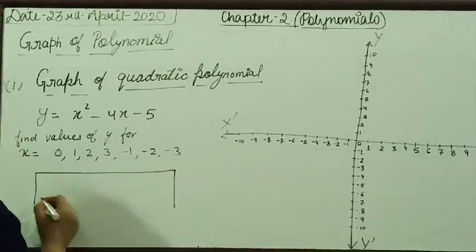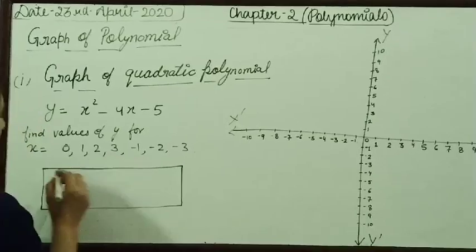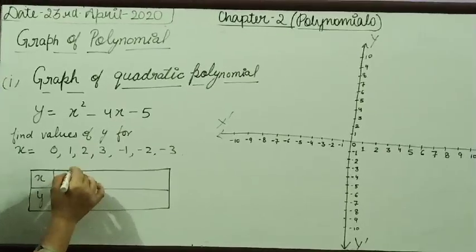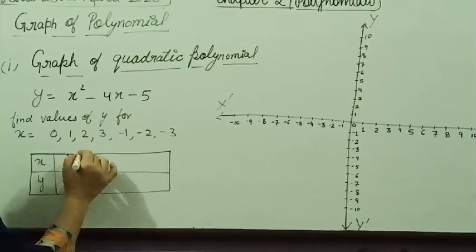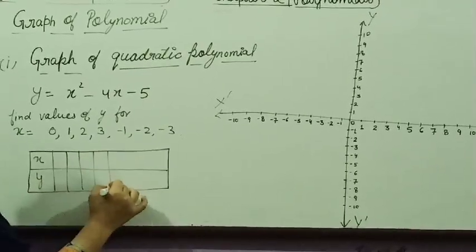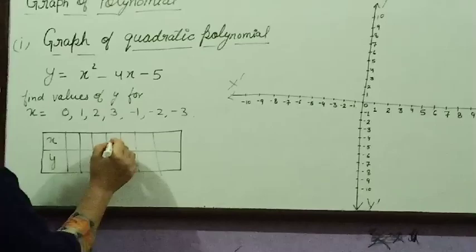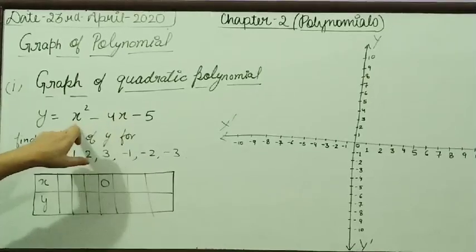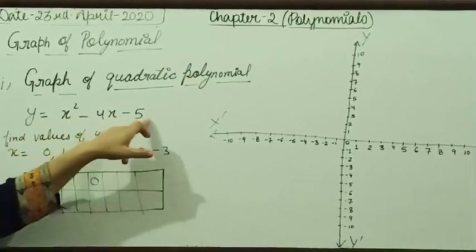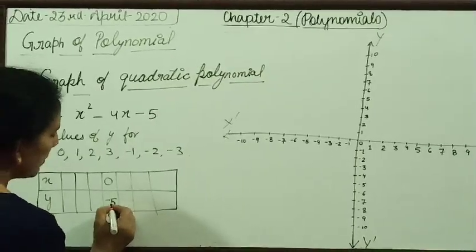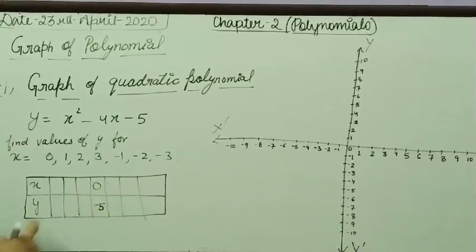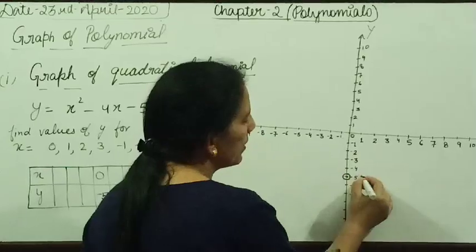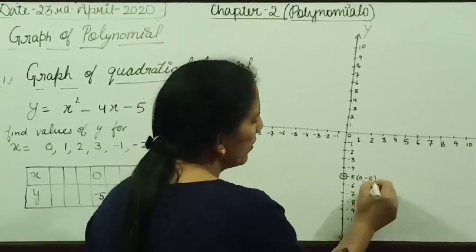This is our second step in which for values of x, we are finding value of y. Note down x and y in this table. We have to take values including 0. If x is equal to 0, we can see 0 minus 0 minus 5. So, value of y is minus 5. Plot this point which is (0, -5). When x is equal to 0, the value of y is minus 5.